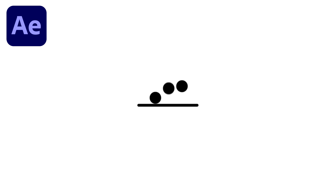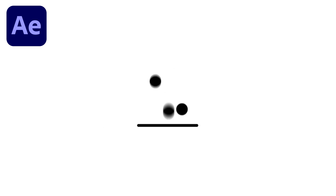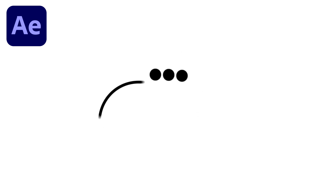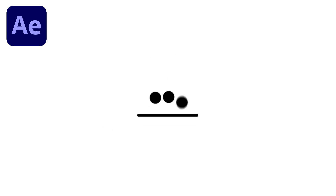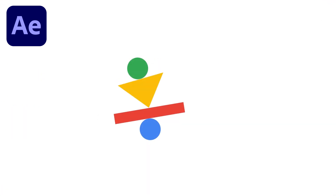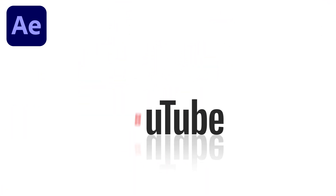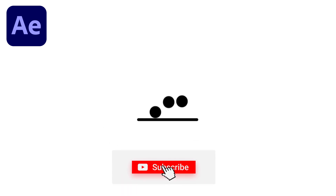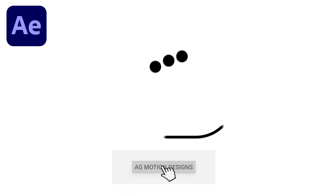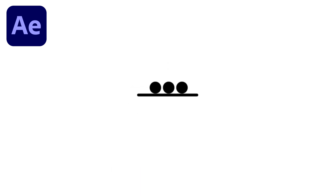Hey guys, welcome back to my channel AG Motion Designs. In today's video we are going to create this looping animation inside of After Effects without using any third-party plugin, but with the help of Adobe Illustrator. If you are interested in logo animation and other stuff, check out my Udemy course — link is in the description. If you are new to this channel, please subscribe and hit the bell icon. Let's get started.